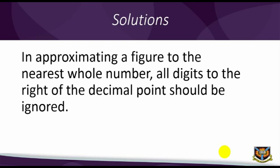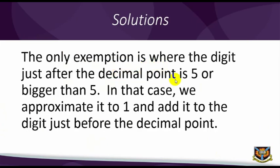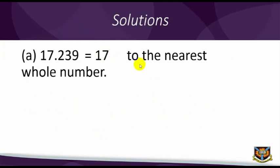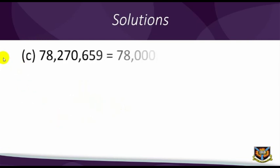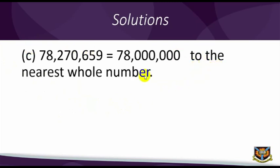In approximating a figure to the nearest whole number, all digits to the right of the decimal point should be ignored. The only exemption is where the digit just after the decimal point is 5 or bigger than 5. In that case, we approximate it to 1 and add it to the digit just before the decimal point. A. 17.239 is equal to 17 to the nearest whole number. B. 12.549 is equal to 13 to the nearest whole number. C. 78,270,659 is equal to 78,000,000 to the nearest whole number. Note that 78,570,659 will be equal to 79,000,000 to the nearest whole number.